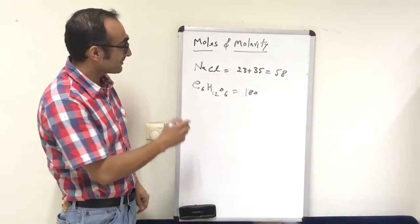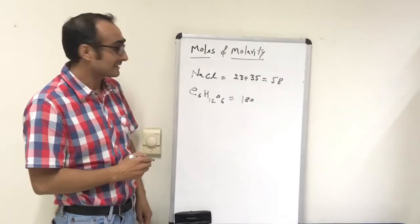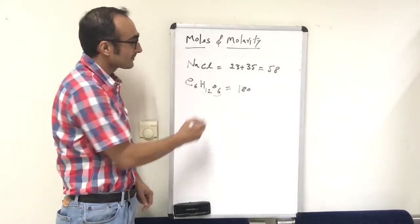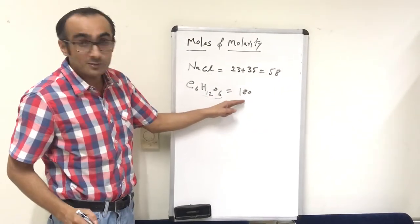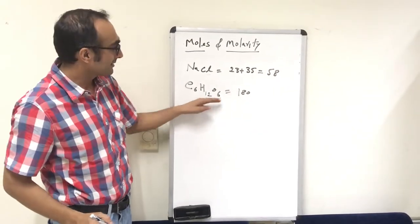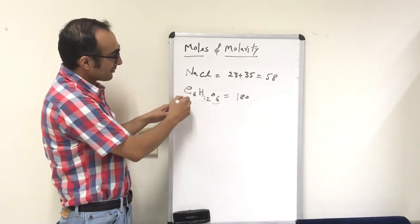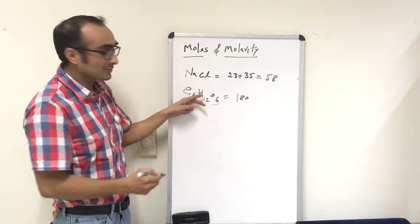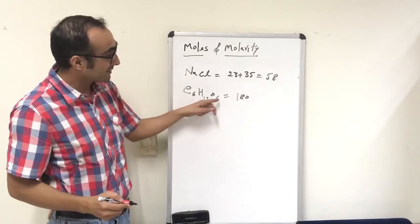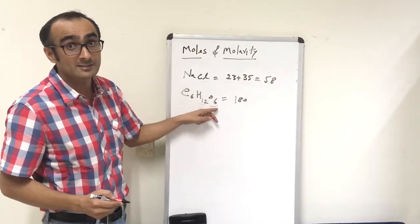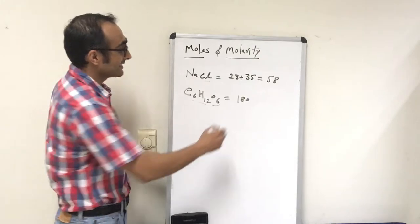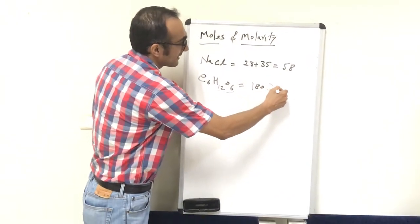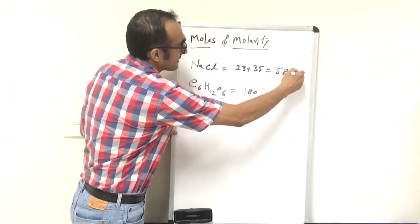Similarly, glucose, which is C6H12O6, its molecular weight would be the combination of 6 carbon atoms, 12 hydrogen atoms, and 6 oxygen atoms, which equals 180 Daltons. You represent this in terms of Daltons.